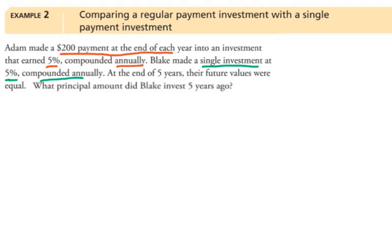The reason we have to look at Adam's is because we know that Adam paid $200 each year in. We don't know how much Blake paid in. We don't know how much Blake ends up with. All we can go with is Adam's information.